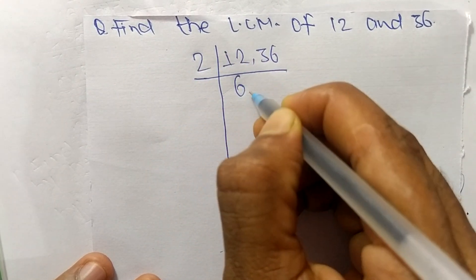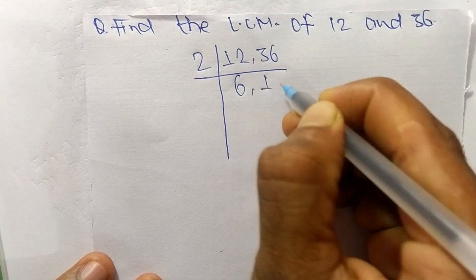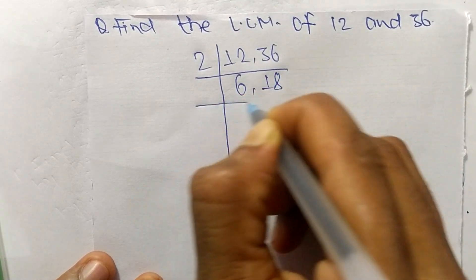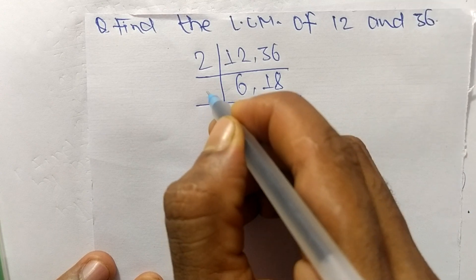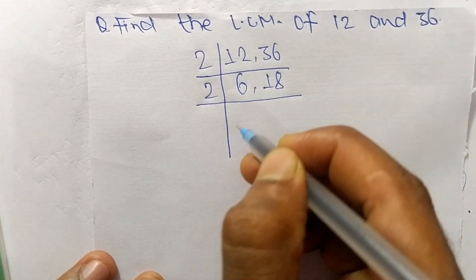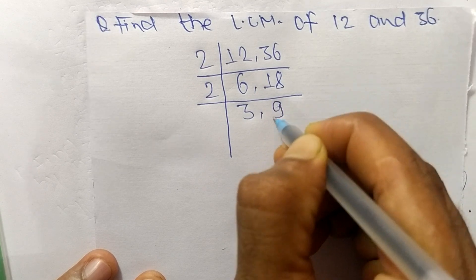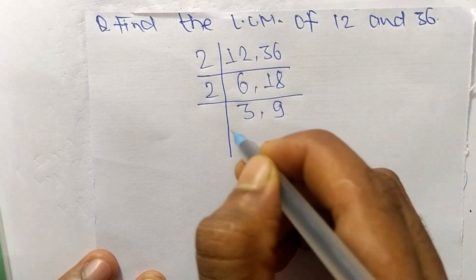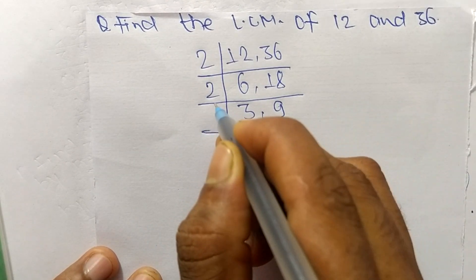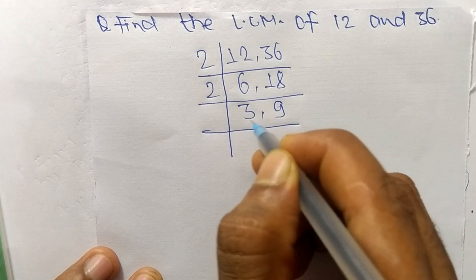So 2 times 6 means 12, and 2 times 18 means 36. So again we take here 2. So 2 times 3 means 6, and 2 times 9 means 18. So the next number, now 2 can't exactly divide 3 and 9, so we choose the next number greater than 2, which is 3.